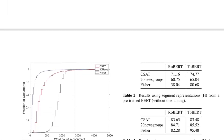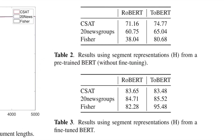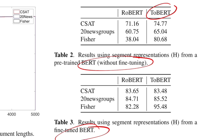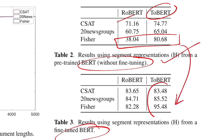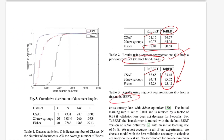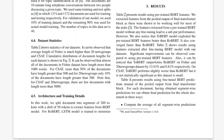Talking about the results, they evaluate both with and without fine-tuning BERT. ToBERT clearly outperforms RoBERT across all datasets. Especially for the Fisher dataset, the margin is huge — 38.04 for RoBERT versus 80.68 for ToBERT when not fine-tuning BERT. Even when fine-tuning BERT, ToBERT still has better performance compared to RoBERT.